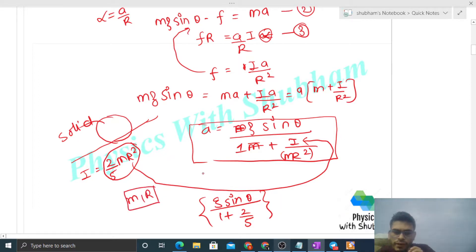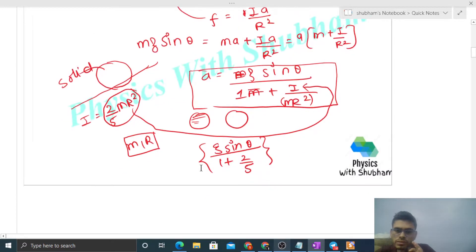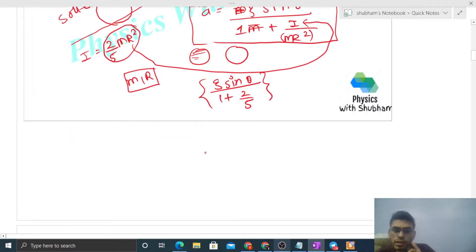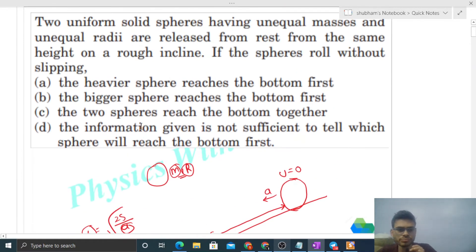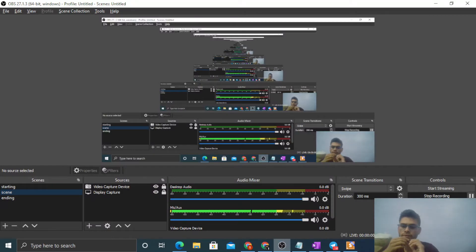If both acceleration will be same, then both time will be same because both distance will be same. Time equals square root of 2s upon acceleration. S will be same and acceleration will be same, so time will be same. Option C is correct. I think it's clear, let me know if you have any confusion. Keep working hard, best of luck, bye.